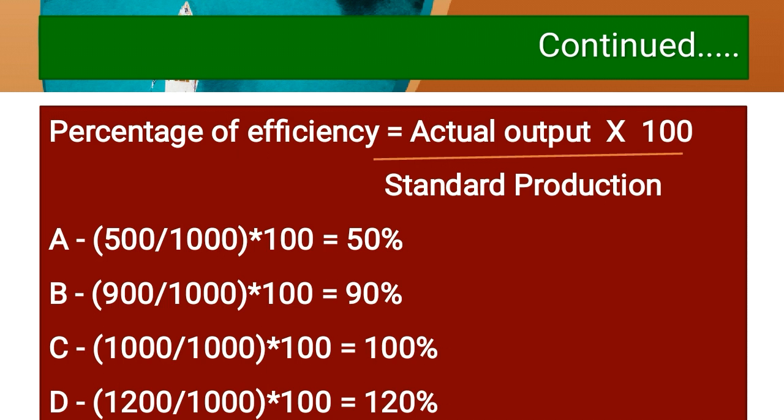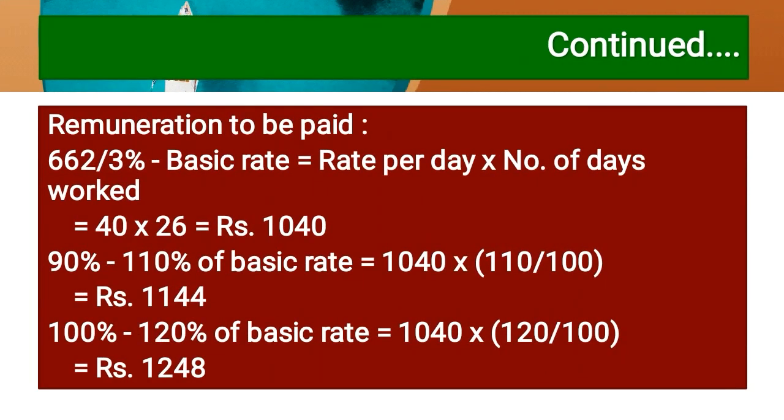D is at 120% efficiency: paid 120% of basic rate plus 20% additional bonus for the 20% increase in efficiency above 100%. So D gets 140% of basic rate. Basic rate = 26 days × Rs. 40 = Rs. 1,040. For B at 90%: 110% of Rs. 1,040 = Rs. 1,144. For A: basic rate only = Rs. 1,040.